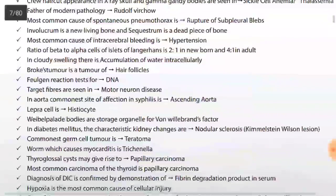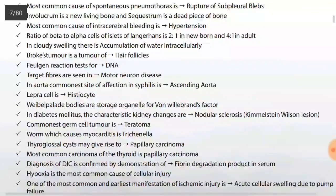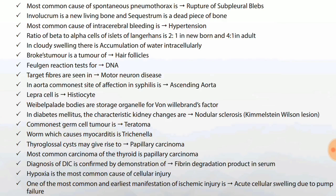Most common cause of spontaneous pneumothorax is rupture of subpleural blebs. In osteomyelitis, involucrum is new living bone and sequestrum is a dead piece of bone. Most common cause of intracerebral bleeding is hypertension.